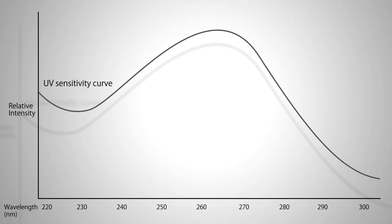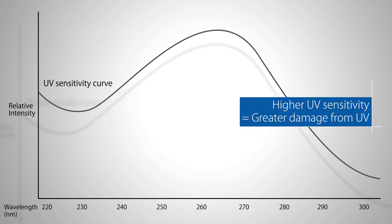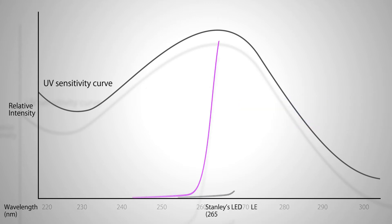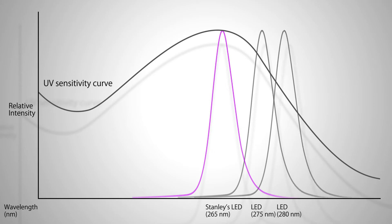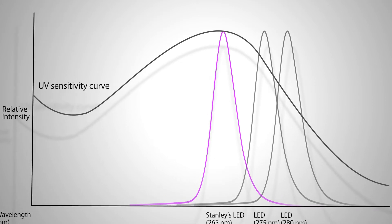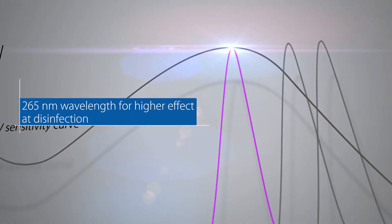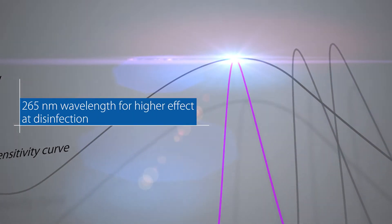This graph illustrates the UV sensitivity of DNA and RNA. The higher the UV sensitivity, the greater the damage received from UV, meaning they are inactivated more easily. The peak UV sensitivity is at wavelengths around 265 nanometers, where the bactericidal effects are higher than at other wavelengths.